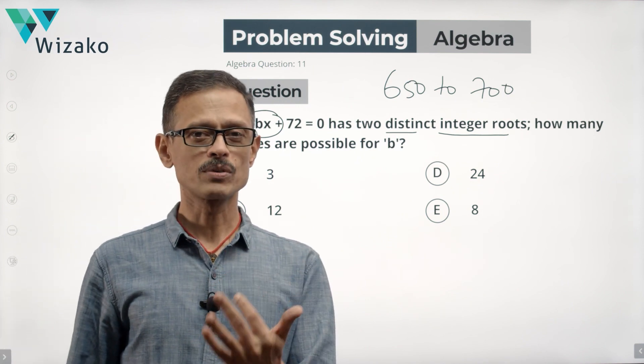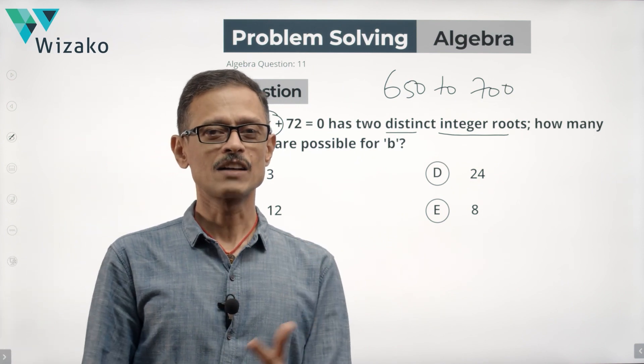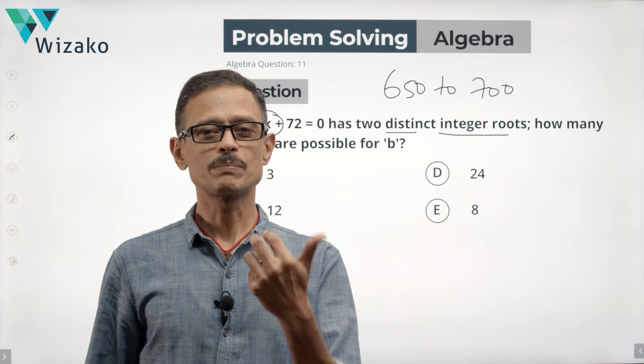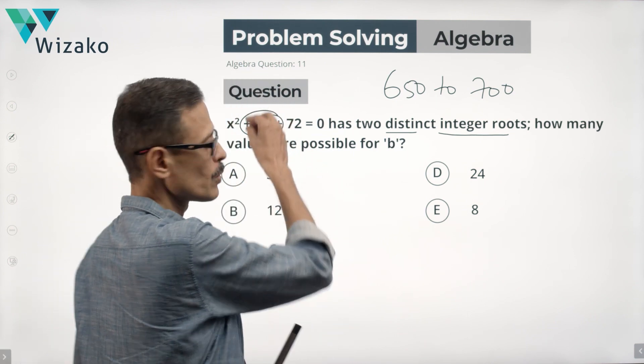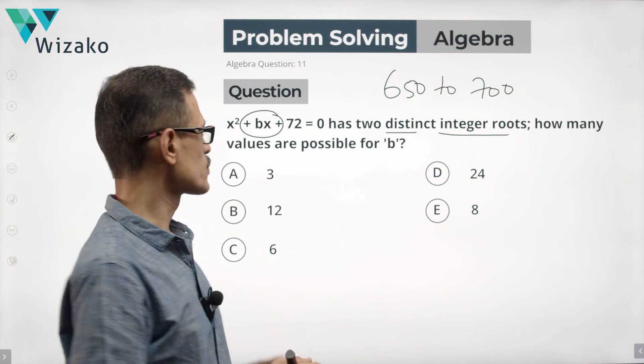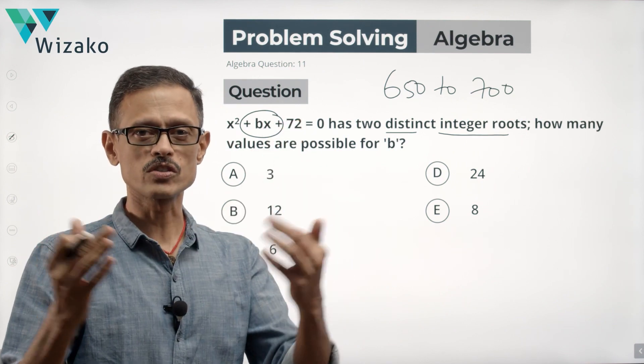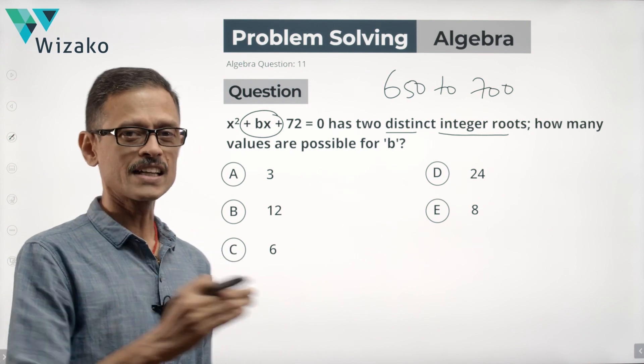Let's get started by understanding how do we compute the sum of the roots of a quadratic equation and product of the roots of a quadratic equation. The primary reason being that that would tell us we'll get an idea about the values that B can take given the values about what the product of the roots of the quadratic equation are. So let's get started with that theory.